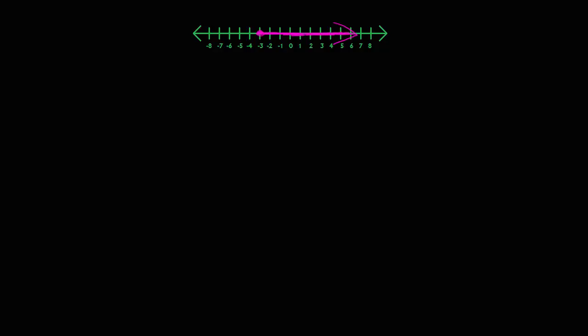The first thing we need to do is find the endpoint of our inequality. In this case our endpoint is at the number negative 3. So we have something going on at the number negative 3.